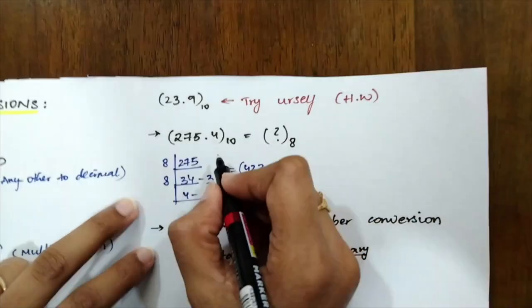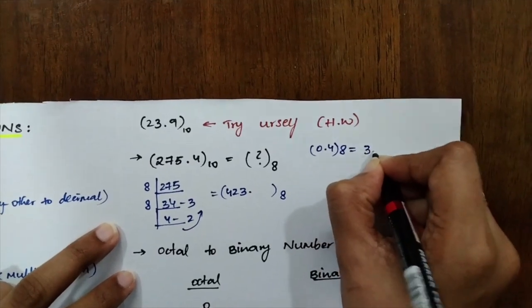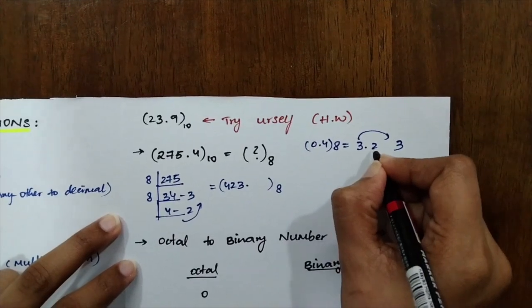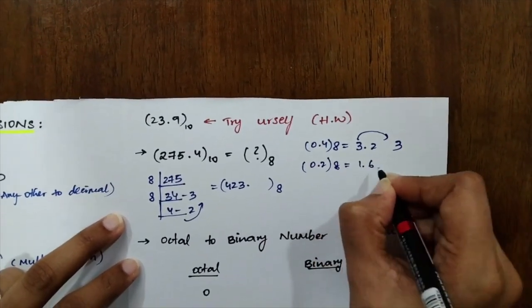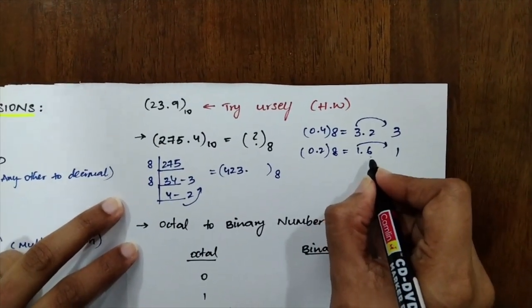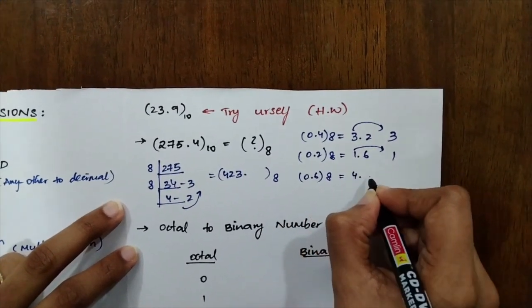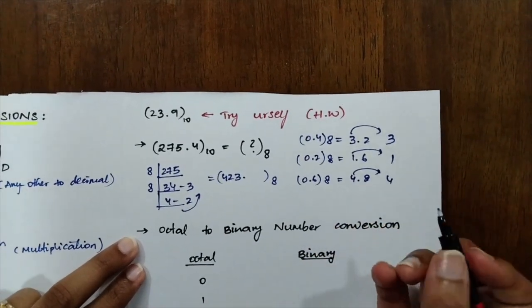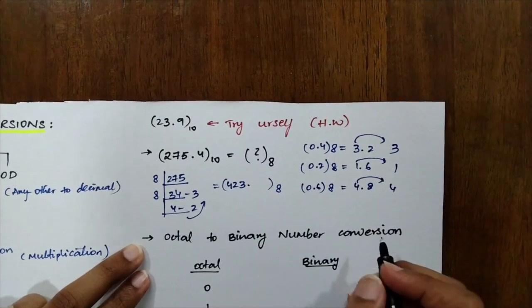Now, what does that actually mean? 0.4 into 8 equals 3.2. Get only the integer part, which is 3. Now, again, the ones left after the decimal are 0.2. 0.2 into 8 equals 1.6. Take only the integer 1. Now, again, the ones left out after the decimal is 0.6 into 8 equals 4.8. Again, consider only 4. And you can keep on going. But maximum 3 decimal points are enough for any problem if you want to solve.